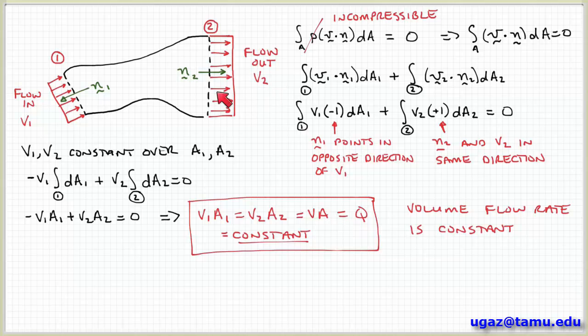So conservation of mass over this kind of control volume that is like flow through a pipe gives me the result that the product of the velocity times the cross sectional area is constant for the case of incompressible steady state flow. Remember the assumptions that we made.